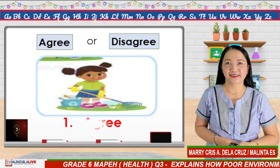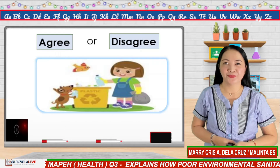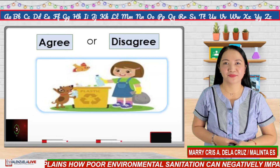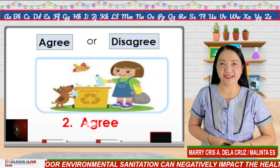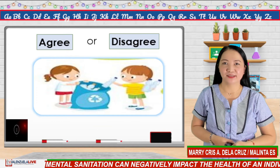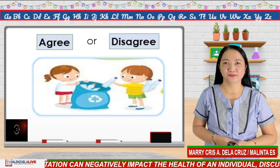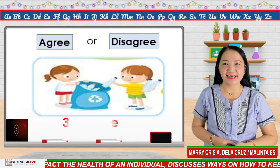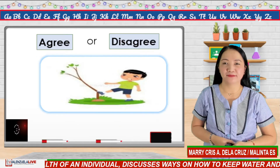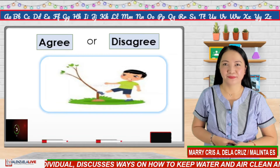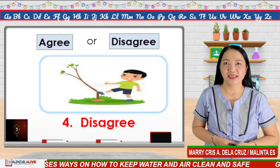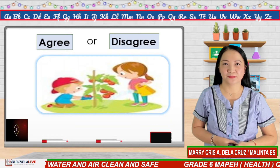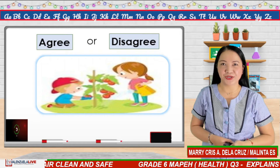Number one — answer: agree. Number two — answer: agree. Number three — answer: agree. Number four — answer: disagree. Number five — answer: agree.